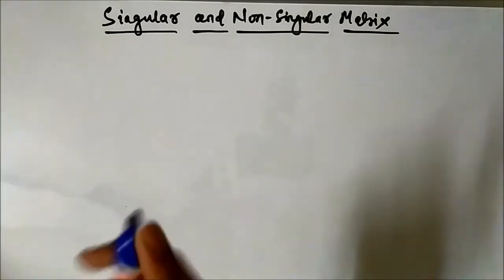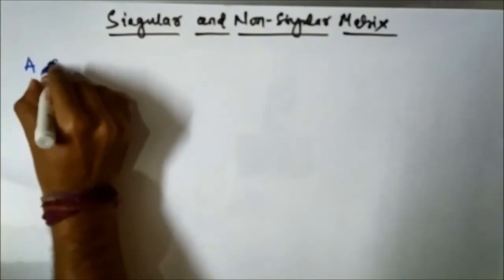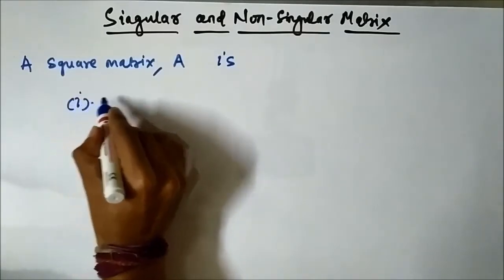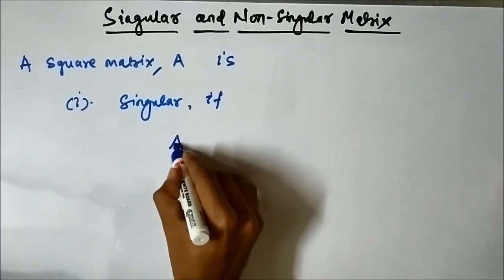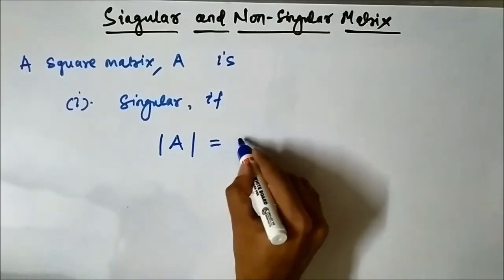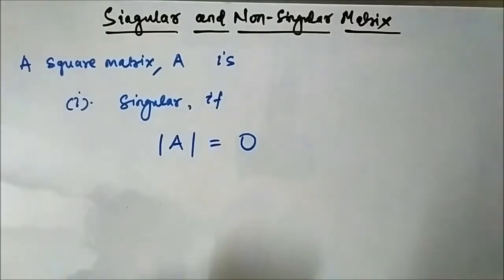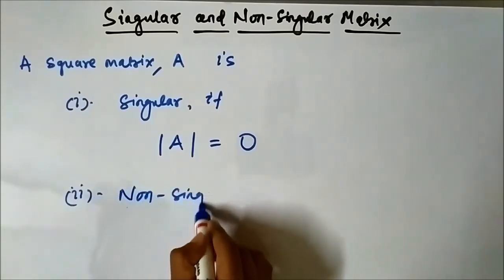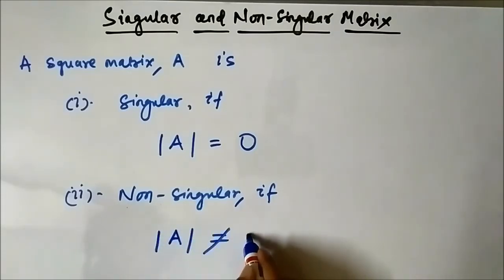First let us see what is the definition of a singular matrix. A square matrix A is said to be singular if its determinant is equal to 0. If the determinant of the square matrix is 0, then it is said to be singular. And it is non-singular if the determinant is not equal to 0 — just the opposite.